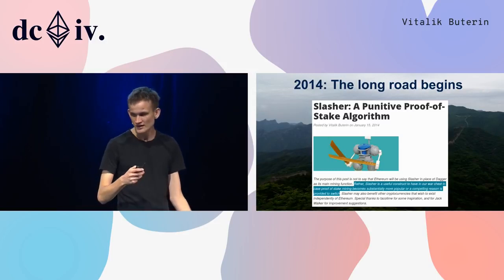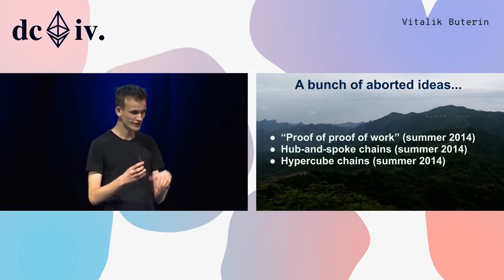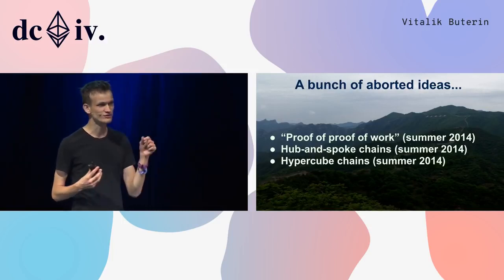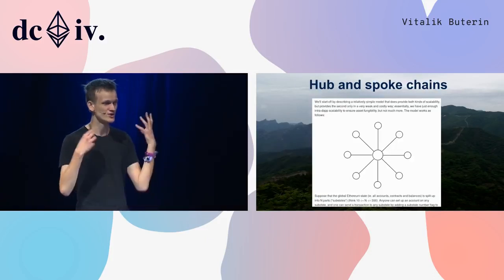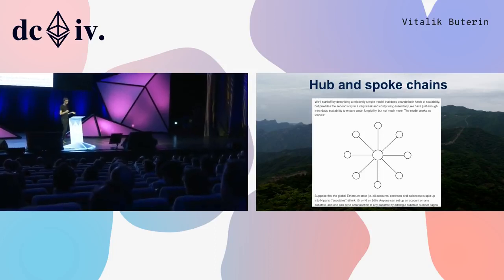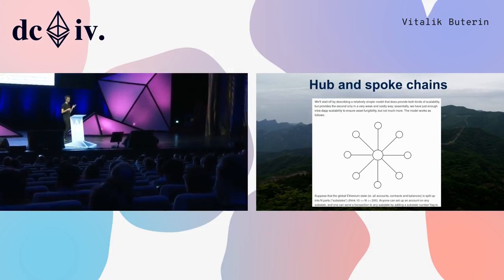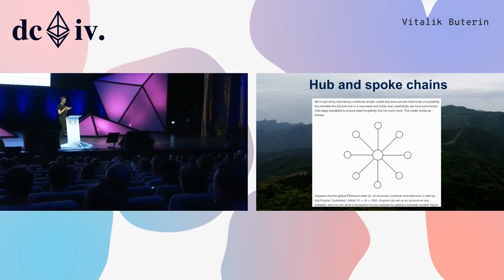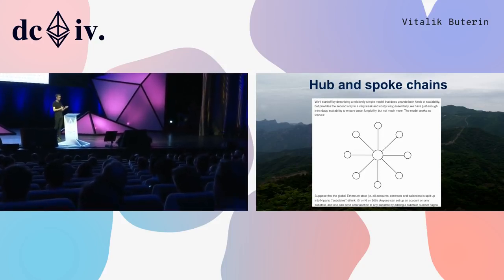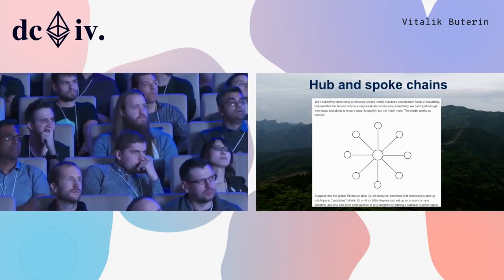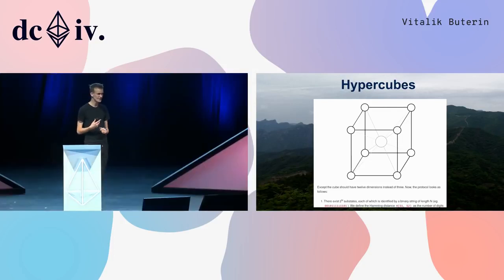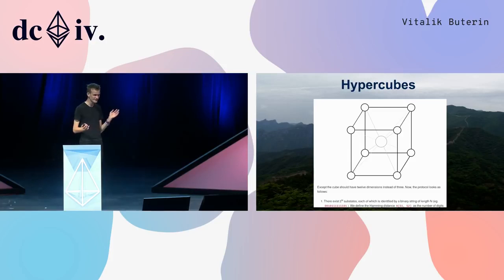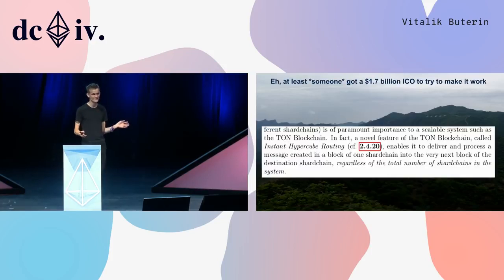At the time it was not even clear that proof of stake was the direction we were going, but over time that changed quite a lot. In 2014 we went through a bunch of interesting and aborted ideas. Proof-of-proof-of-work was a suggestion to try to improve scalability. Hub-and-spoke chains had one chain in the middle and a bunch of chains on the edges — a very early scalability and sharding proposal. Then hypercubes: basically except the cube should have 12 dimensions instead of 3, to get even more scalability.